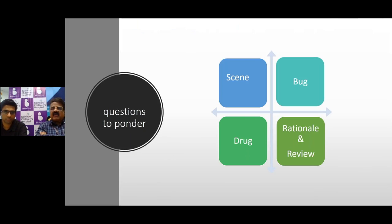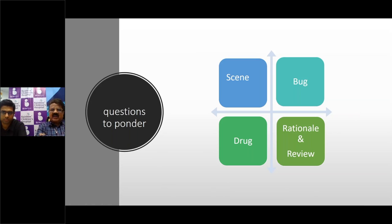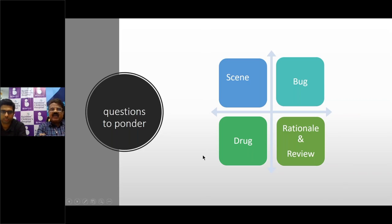When we come across a respiratory scenario, the questions in our mind are: how old is the child, is it a nutritionally normal or undernourished child, what is the immunological status, what is the duration of the illness, and what is the prior antibiotic therapy or history of hospitalization? After examining the child, we determine the responsible bug, the sensitivity of various antibiotics in your locality, and then formulate a rational antibiotic choice supported by a literature review.